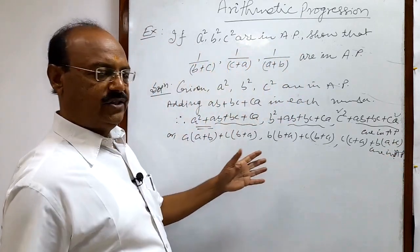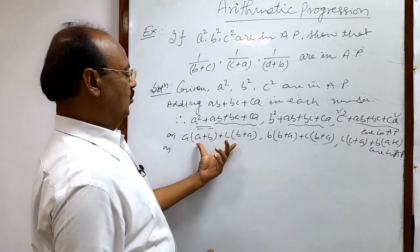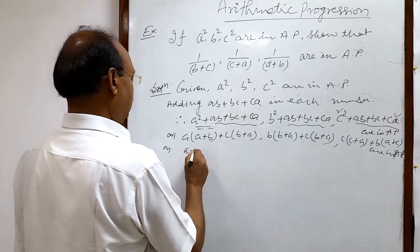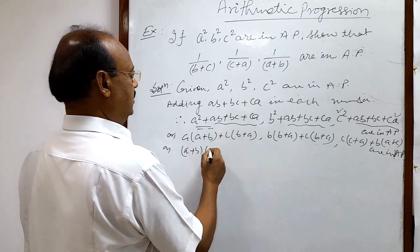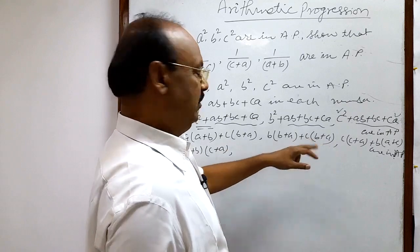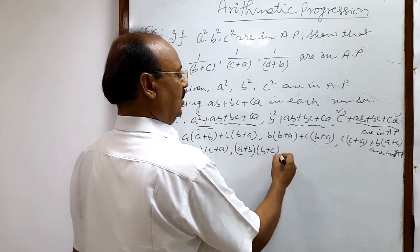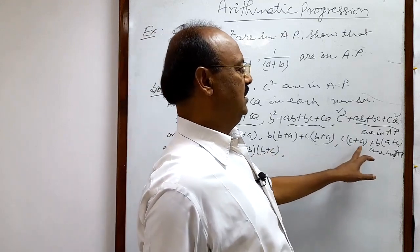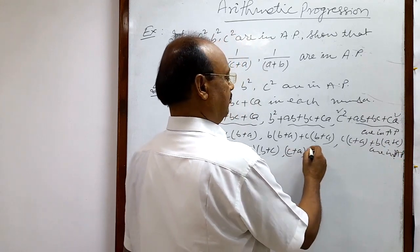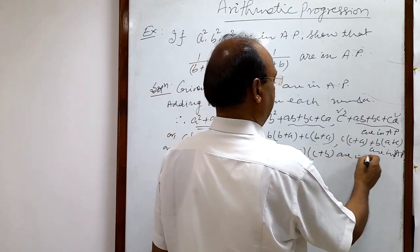Now let us arrange the result. In the first expression, a+b is common in both terms, so taking a+b common we get (a+b)(a+c) or (a+b)(c+a). In the second expression, b+a is common, so we get (a+b)(b+c). In the third expression, c+a is common in both terms, so taking c+a common we get (c+a)(c+b) or (c+a)(b+c). These are in AP.